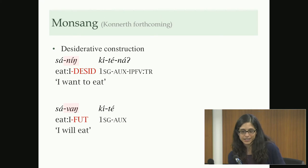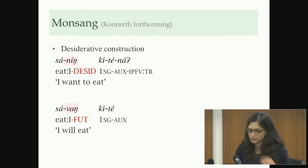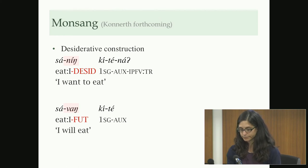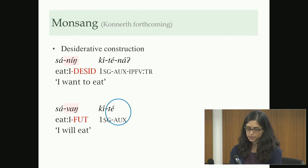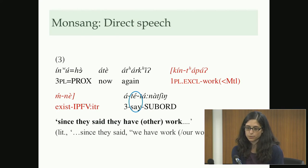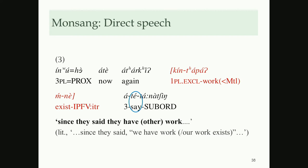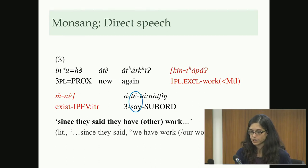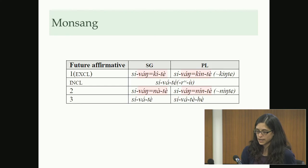The construction is extremely similar to the basic future: the way you say 'I will eat' in Monsang is 'savankite'. It works analogously. The 'te' very obviously comes from the verb 'to say', which is still a lexical verb in Monsang. This is an example of direct speech — 'said our work exists' is just how you do direct speech in Monsang, with 'te' really being the verb 'to say'.